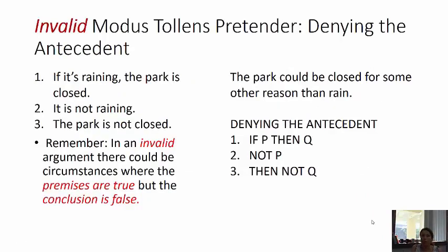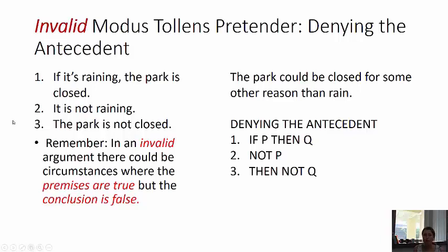Here's the invalid modus tollens pretender. It's called denying the antecedent. You can see it in the park example if we switch the phrasing around: if it's raining, the park is closed; it's not raining, therefore the park is not closed. We flip things around — if P then Q, we deny the antecedent: not P, therefore not Q. Real modus tollens says if P then Q, not Q, then not P. You can see intuitively why this doesn't follow — the park could be closed for other reasons besides the rain.